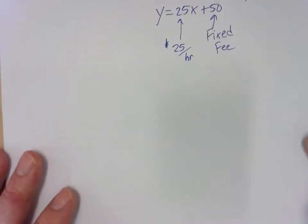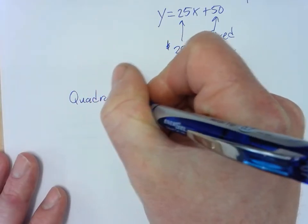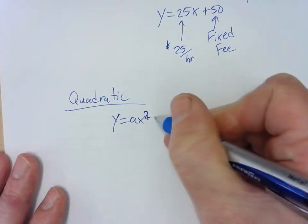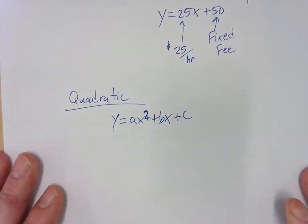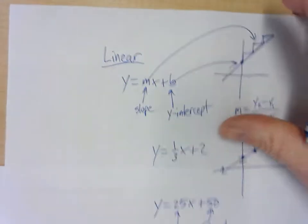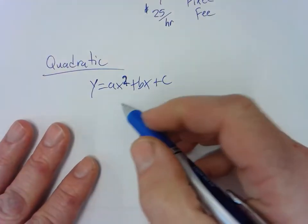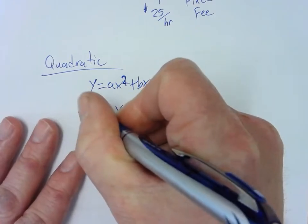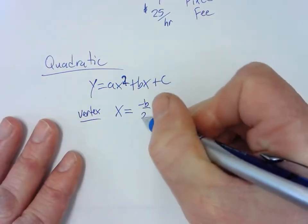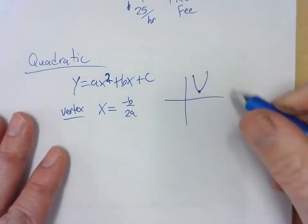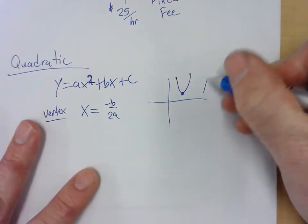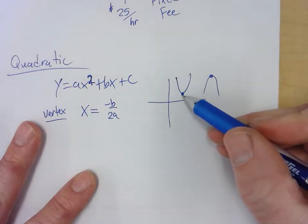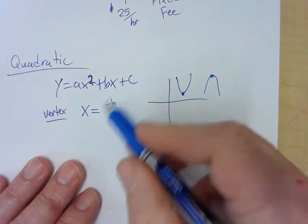The next kind of equation is quadratic. Quadratic equations come in the form y equals ax squared plus bx plus c — there's a 2, so it's x to the second power instead of x to the first. This makes a parabola. The x-coordinate of the vertex — the point where it turns — is negative b over 2a. The vertex is the bottom point, or if the parabola is upside down, the top point — giving a minimum or maximum value.